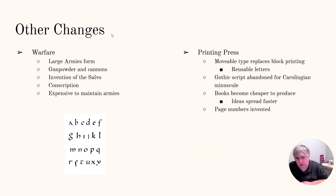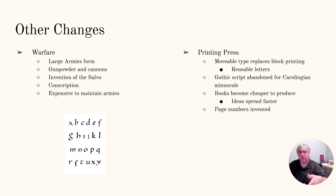Two other changes: warfare changes with the invention of gunpowder and the bringing of firearms. It became very expensive to keep an army, and armies were used during the Renaissance as just a last choice. Conscription happens where you're forcibly drafted into the army, and the idea of the salvo comes out — where you do not shoot your guns all at the same time. So you'd have line one, line two, line three all in a row: line one would shoot, line two would shoot, line three would shoot, and while line two and three are shooting, line one would be reloading. Then the printing press — movable type blocks. Instead of having to carve out an entire page, you'd carve out just individual letters that are reusable. We start using lowercase letters, which means you can write and type even faster. So books become cheaper to produce, ideas are going to spread faster, and page numbers are invented so everybody can stay on the same page.